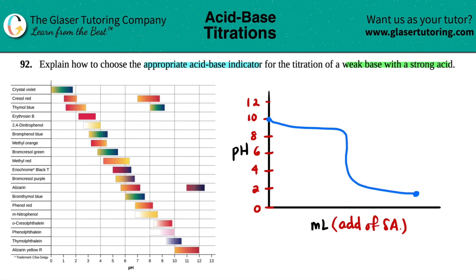To pick the appropriate acid-base indicator, we always want to pick it around the equivalence point. The equivalence point is always right in the middle of that steep drop. Let's estimate where that middle is and mark it — this is your equivalence point.